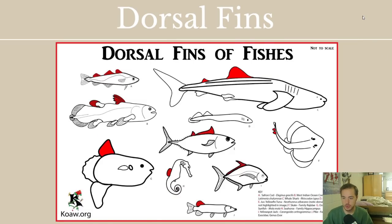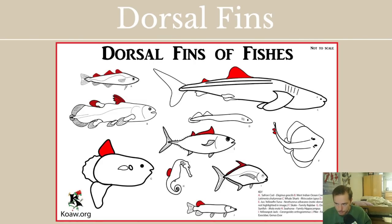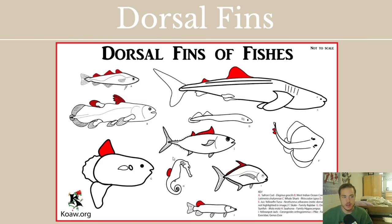Dorsal fins are useful for a variety of things, mainly locomotion. There's great diversity: cod-like fish have a triple dorsal fin, sharks have a typical single dorsal fin, tuna have specialized dorsal fins for speed, the Mola mola has its dorsal fin way back near the caudal fin, rays have dorsal fins that look like spikes on the tail end, and seahorses have a single weird dorsal fin shape on their back.